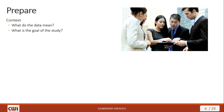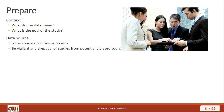The first step is to prepare. Part of the preparation is examining context — what kind of data are we going to collect and what does that data mean? What is the goal of the study? There's usually some question driving the investigation. We need to know that question up front. We also need to consider what sources we're going to use for our data and how objective those sources are. We want to reduce bias as much as possible, so we need to be very vigilant and skeptical of studies from potentially biased sources.